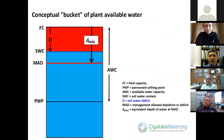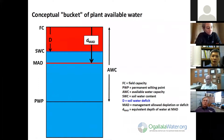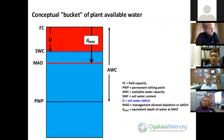Another useful diagram is this conceptual bucket of plant available water. We can conceive of the soil's root zone being able to hold water between the upper limit of field capacity, represented by FC at the top, and permanent wilting point, PWP, which is the bottom limit of that available water capacity. The difference between field capacity and permanent wilting point is what we call the available water capacity, or AWC.